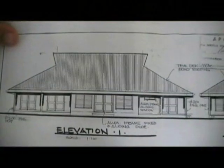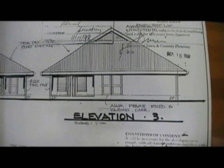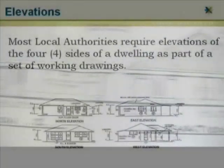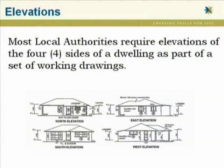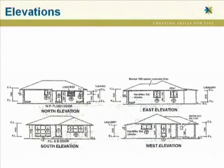Elevation drawings are designed to provide information across the breadth and height of a project. The information found in an elevation would be difficult, if not impossible, to communicate on a plan view. Elevations of a construction project are usually presented from four sides — this is often the requirement of local authorities. These four sides are usually presented as north, east, south, and west elevations. As can be seen here, elevations can also be referred to as elevations 1, 2, 3, and 4.